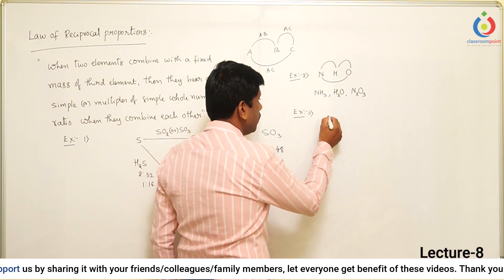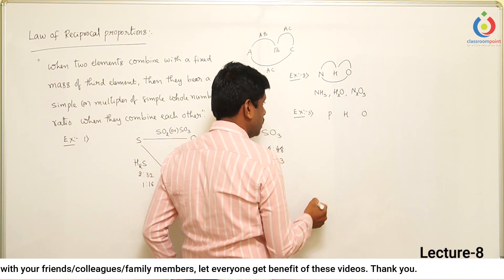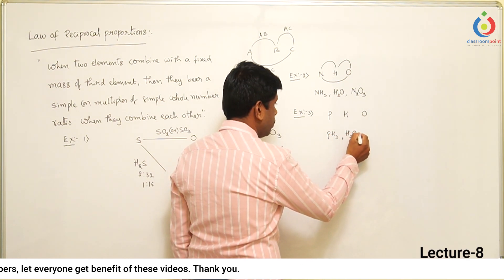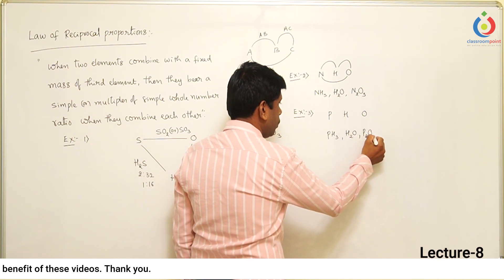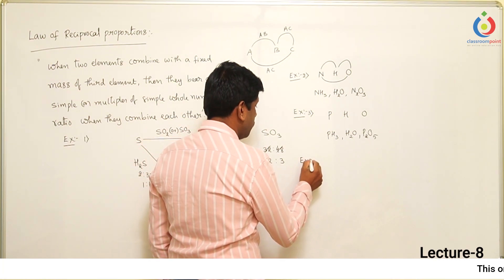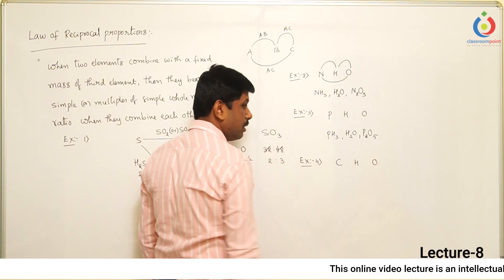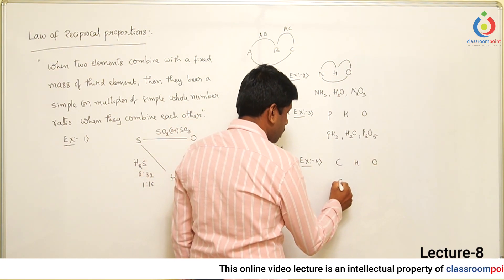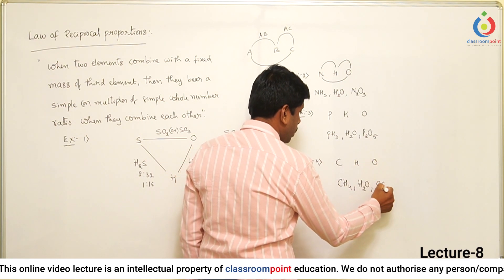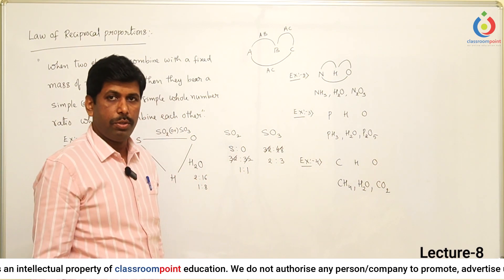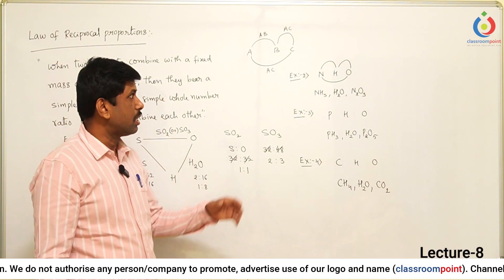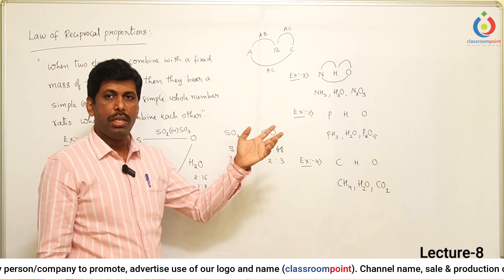Let us take another example: phosphorus, hydrogen, and oxygen. Phosphorus with hydrogen gives PH₃; hydrogen with oxygen gives H₂O; phosphorus with oxygen gives P₂O₅ or P₂O₃ — you can take any of those. Another example: carbon, hydrogen, and oxygen. Carbon and hydrogen produce CH₄; hydrogen and oxygen produce H₂O; carbon and oxygen produce CO or CO₂. To understand the law of reciprocal proportions, there must be 3 different elements with 3 different combinations.